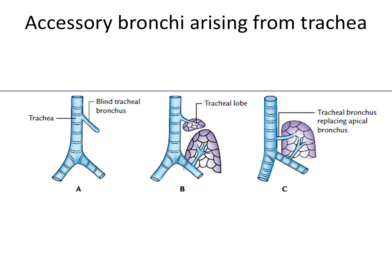Next, accessory bronchi may arise from the trachea. The bluish structure is the trachea and the accessory bronchus arises at a higher level. These are the normal two bronchi, and the accessory bronchus arises at a higher level. A small lobe of the lung may be related to this extra bronchus. From the principal bronchus, another bronchus may arise and enter the lung tissue. In the tracheal bronchus type, the accessory bronchi enter the lung tissue while the apical bronchus does not.